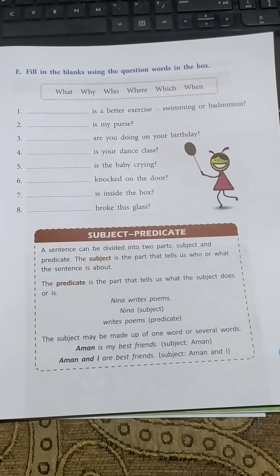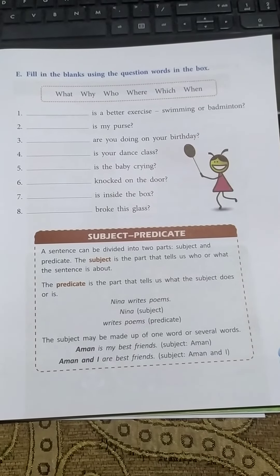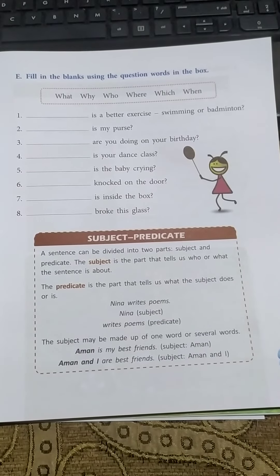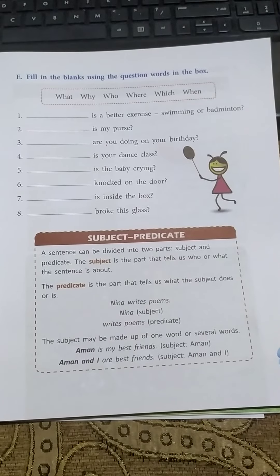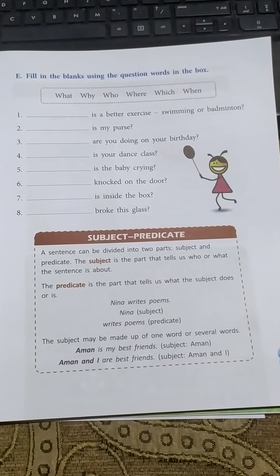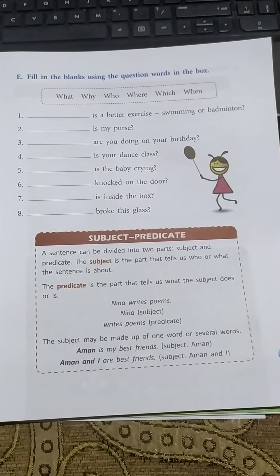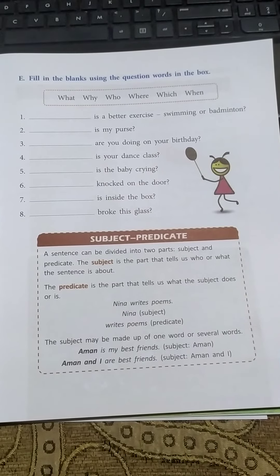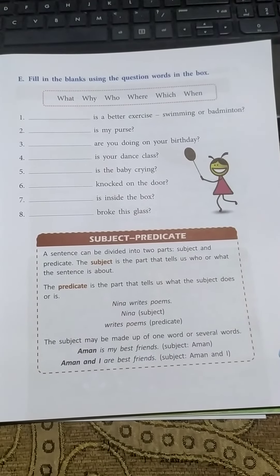Number 5: 'Dash is the baby crying?' Answer: Why is the baby crying? Number 6: 'Dash knocked on the door?' Answer: Who knocked on the door? Number 7: 'Dash is inside the box?' Answer: What is inside the box? Number 8: 'Dash broke this glass?' Answer: Who broke this glass?